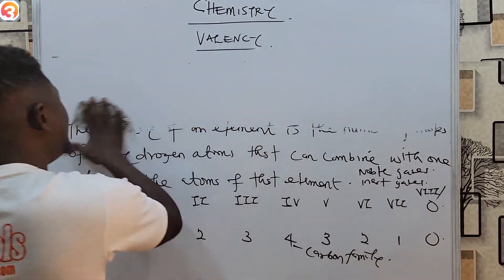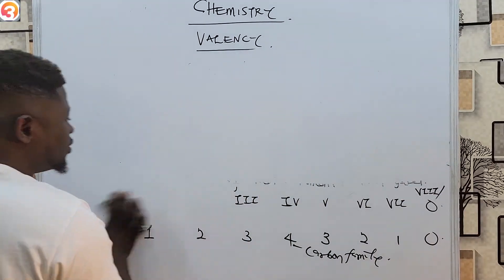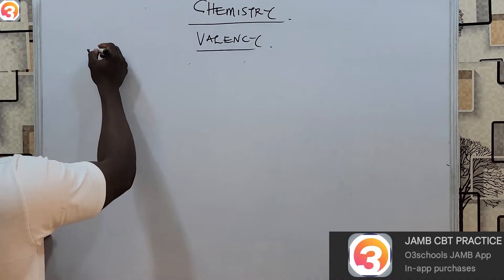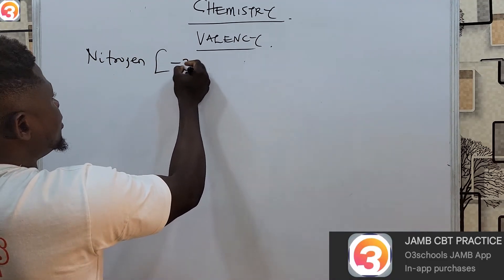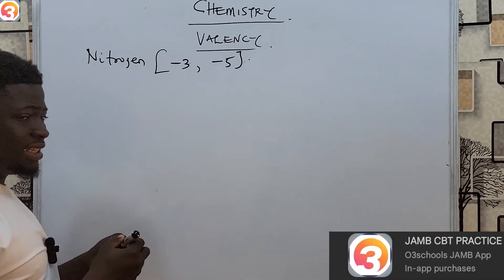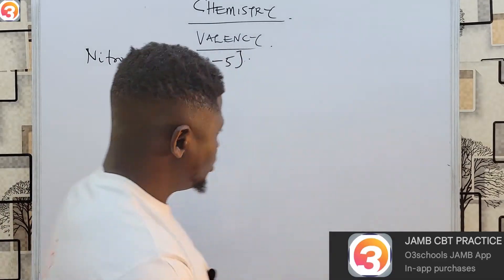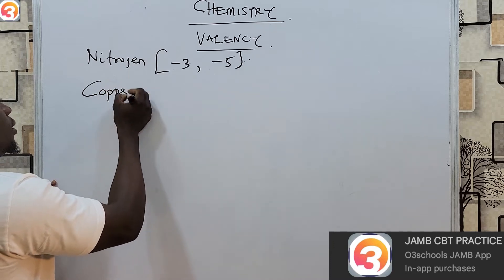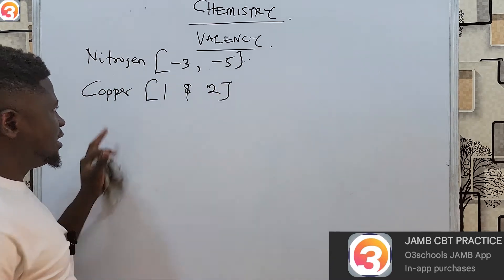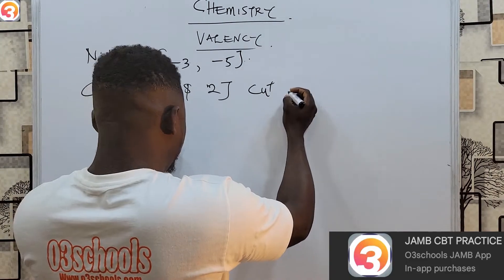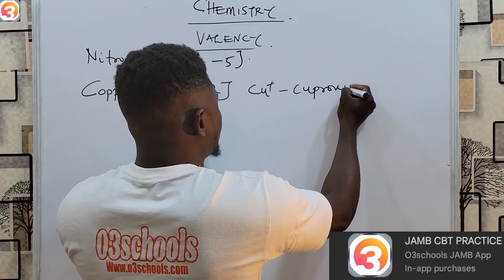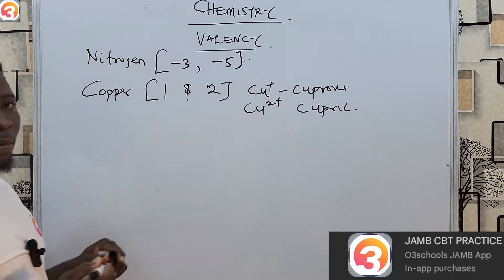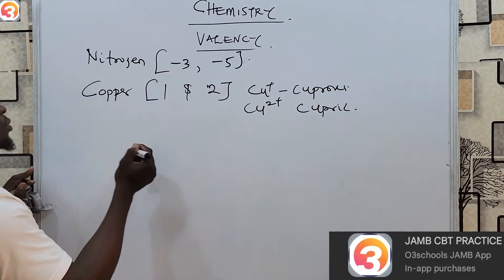Let's see examples of elements that have variable valency. First, nitrogen has valency of minus three or minus five — these are the valencies of nitrogen. Copper also has variable valency of one and two. Cu⁺ is called the cuprous ion, while Cu²⁺ is called the cupric ion.